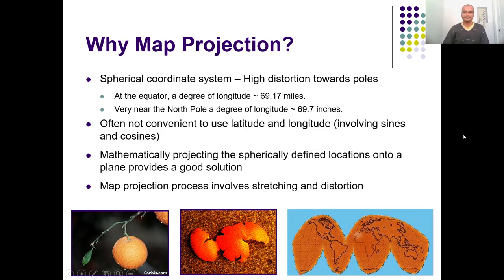Let us start with why map projection is required. In the last lecture we discussed the problems with the spherical coordinate system. Spherical coordinate systems are good to represent the sphere in a globe model. But when projecting the globe onto a flat surface, the poleward regions are highly distorted. At the equator, the degree of longitude is about 70 miles, but near the pole it is just 70 inches. When transforming to a flat system without projection, you are stretching 70 inches into 70 miles, which means applying a higher amount of distortion.